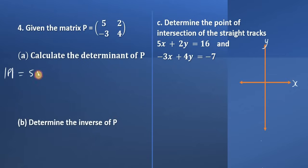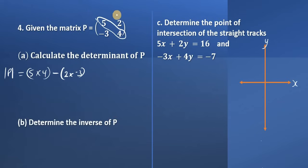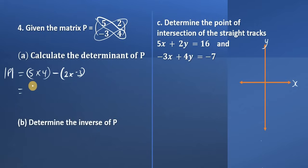We multiply 5 times 4 minus 2 times negative 3. So we're multiplying these elements — that's 5 times 4. We call these the elements of the leading diagonal. We also multiply the elements of the non-leading diagonal: 2 times negative 3.